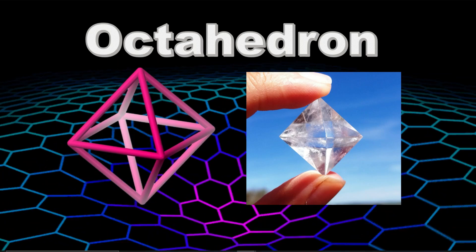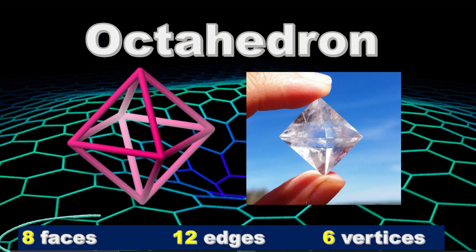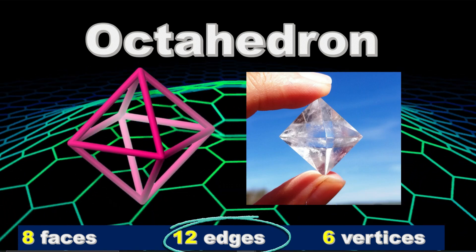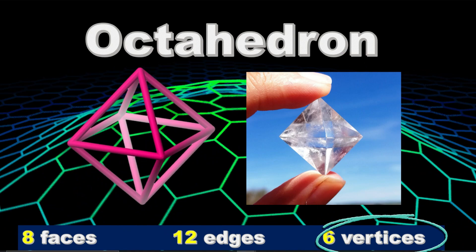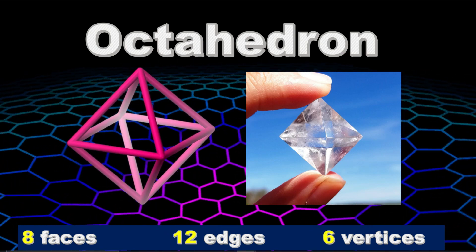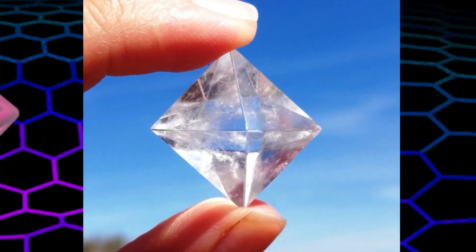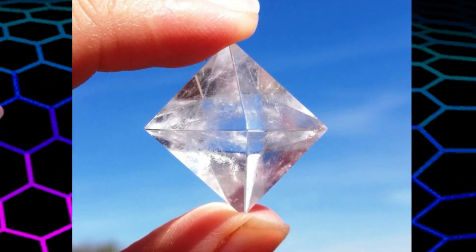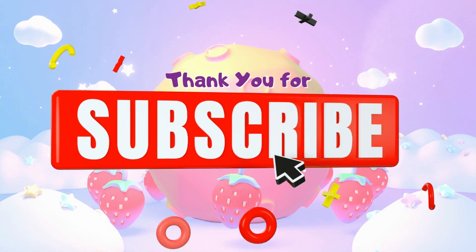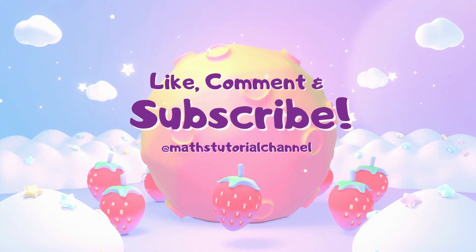Octahedron. Octahedron has eight faces, 12 edges, and 6 vertices. An example of octahedron is a diamond. It looks great! Don't forget to subscribe to this channel, and let's learn together! Bye!